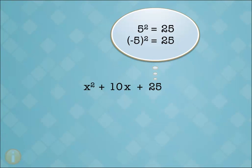Next, the coefficient of the middle term must be two times one of these values. It is. It's two times plus 5. So this is a perfect square trinomial.